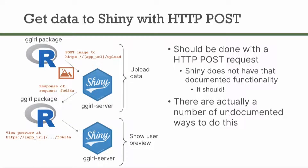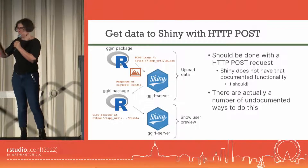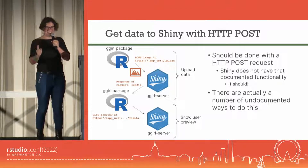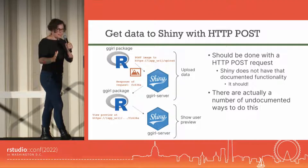The way you would do that in web development is you do an HTTP POST request. An HTTP POST request is a way an API or a website receives data — when you hit submit on a website, your browser is doing a POST request to the server. That should be done with a POST request. Shiny does not have a documented ability to listen for POST requests; normally only Plumber does that. It should have this — that's my call-out to Posit. I think that would be a really great feature. The good news is there are actually a number of undocumented ways to do this.